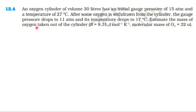From NCERT Textbook, from the topic Kinetic Theory of Gas, Exercise 13.4: An oxygen cylinder of volume 30 liters has an initial gauge pressure of 15 atm and a temperature of 27 degrees centigrade. After some oxygen is withdrawn from the cylinder, the gauge pressure drops to 11 atm and its temperature drops to 17 degrees centigrade. Estimate the mass of oxygen taken out of the cylinder. Given R = 8.31 J/mol/K, molecular mass of oxygen = 32 atomic mass units.